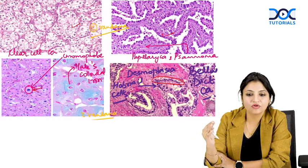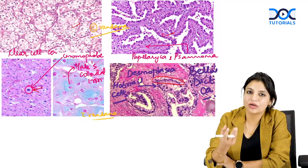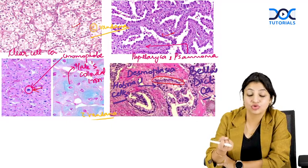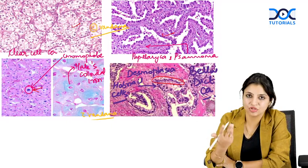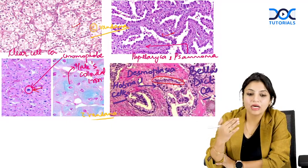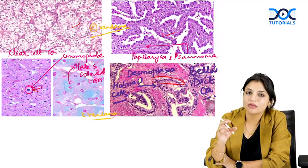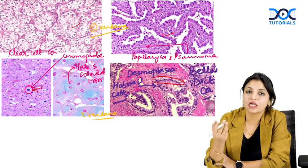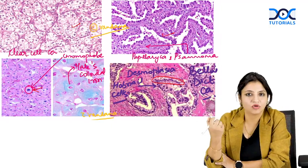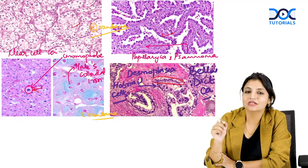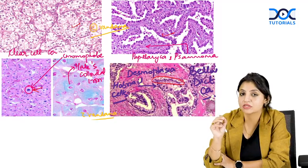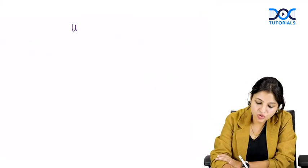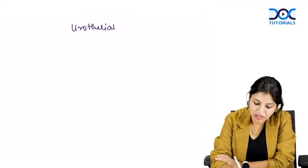Renal cell carcinoma usually presents with mass, pain, and hematuria, but until the tumor size becomes extensive it can remain asymptomatic. This is in contrast to urothelial cancer of the renal pelvis, which is another very important cancer to know.